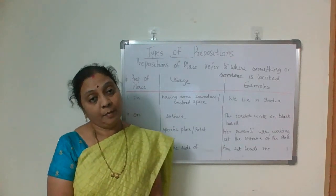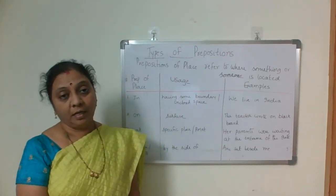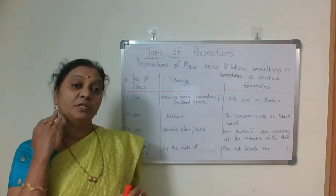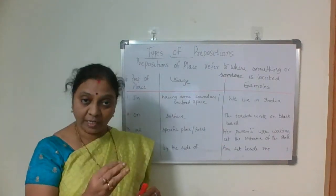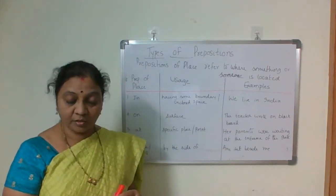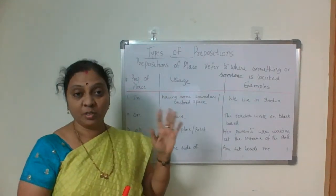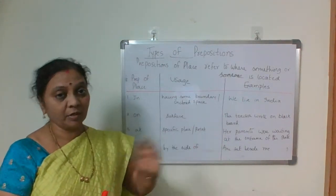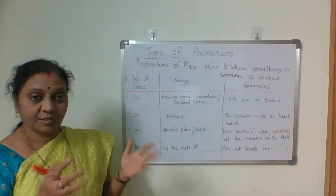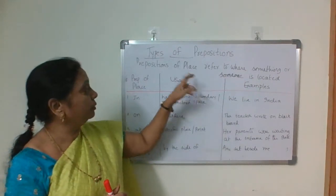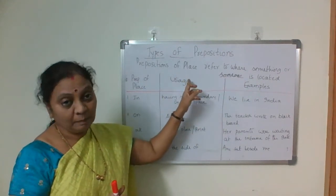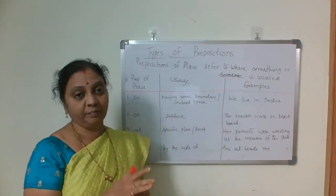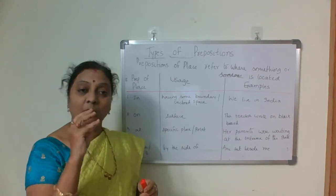I started prepositions and I discussed seven types of prepositions: prepositions of time, place and movement or direction. We completed the first type — prepositions of time — based on the usage, broadly three categories. Today we do prepositions of place. They refer to where something or someone is located.